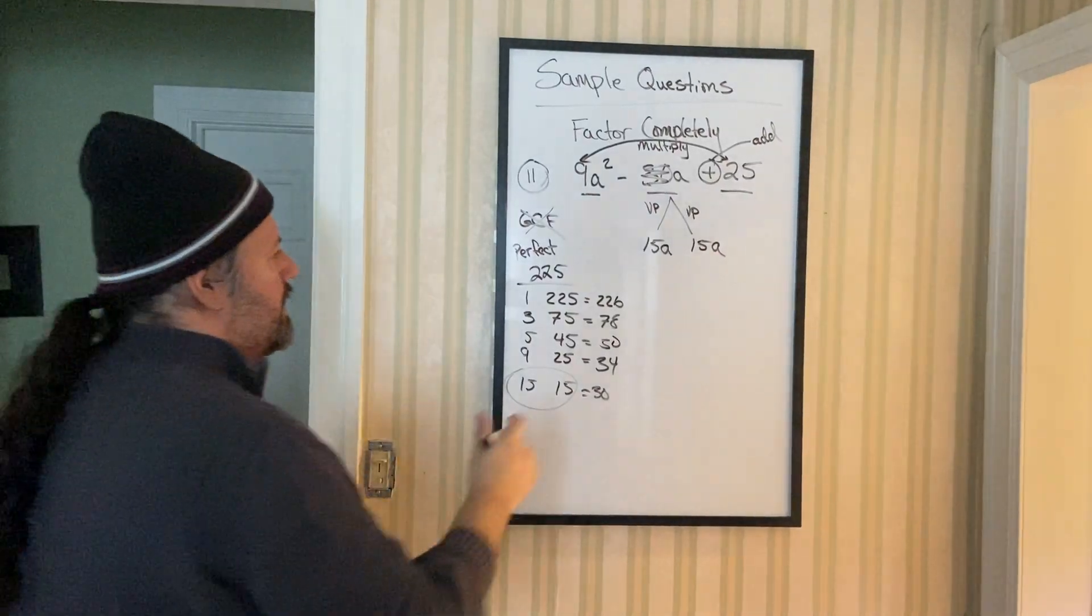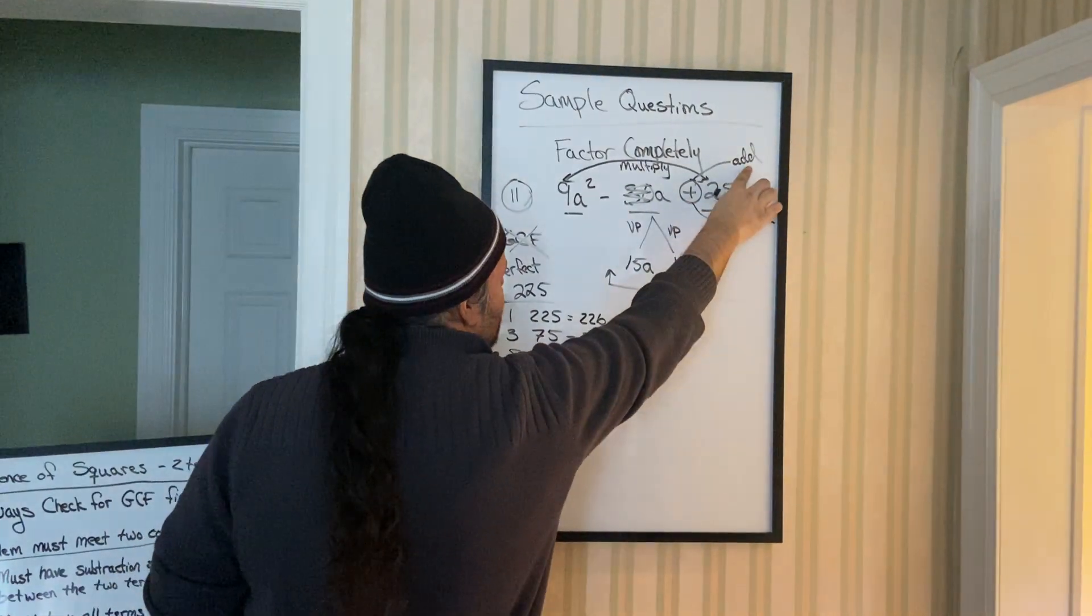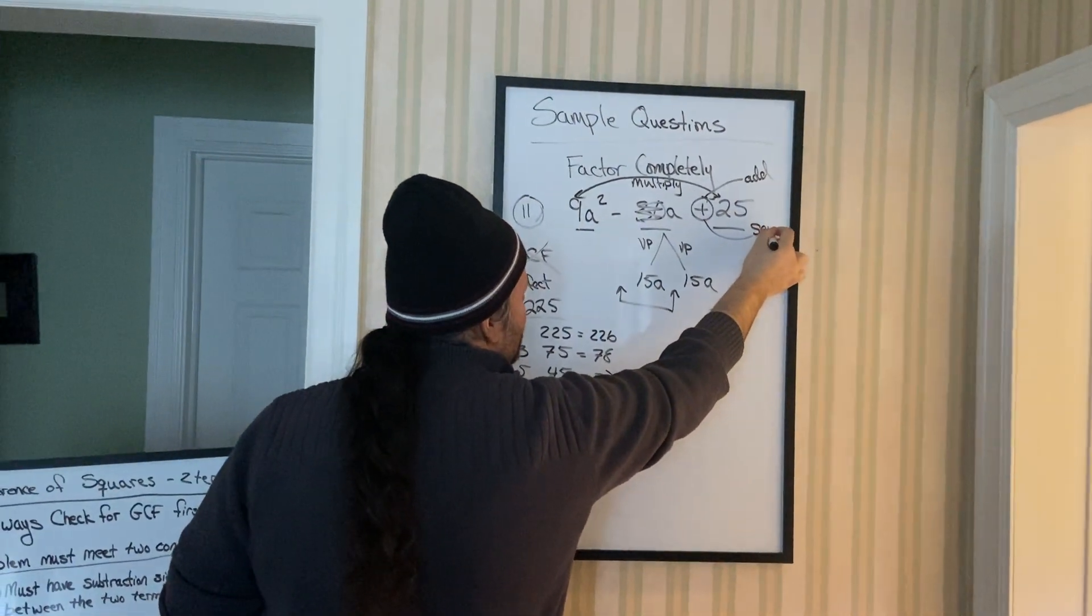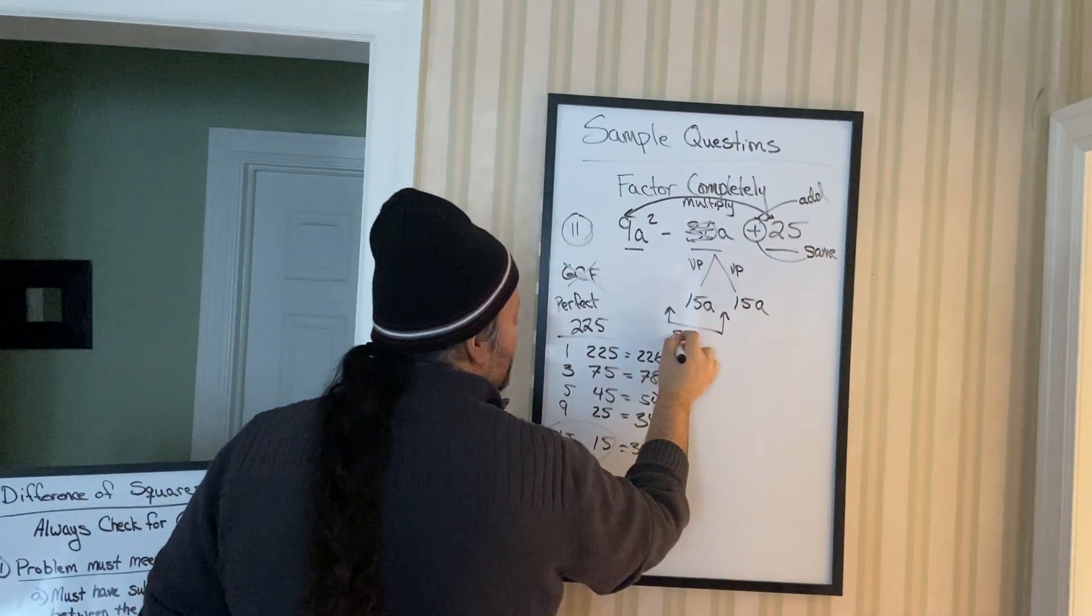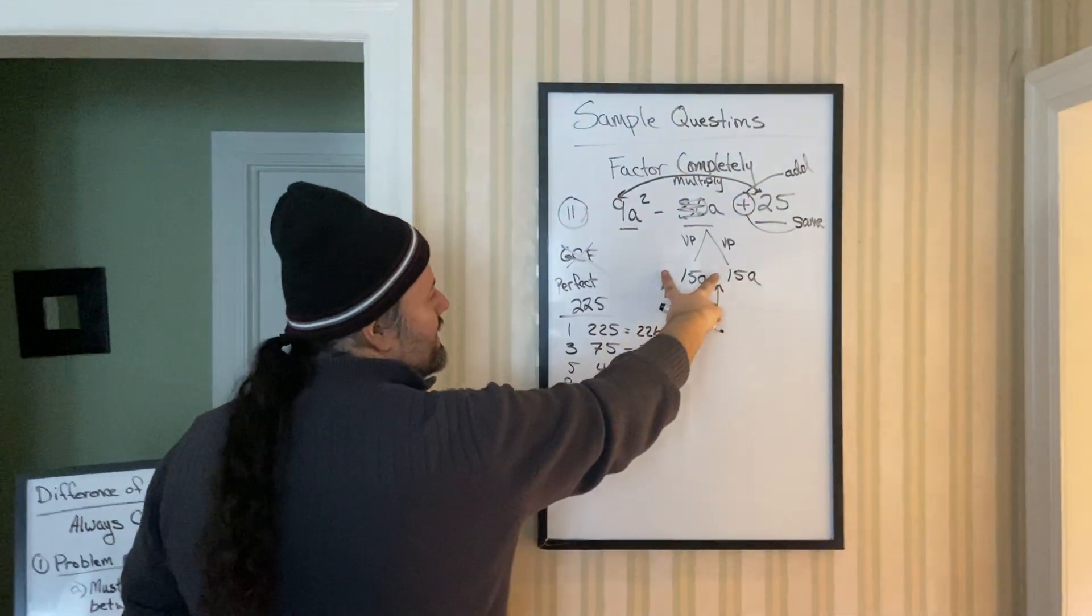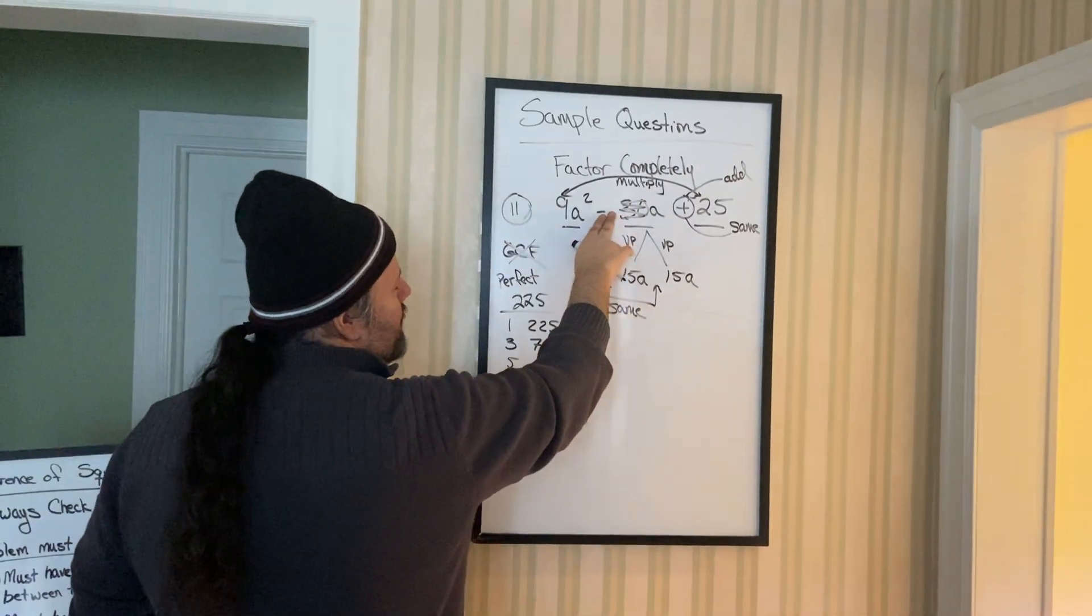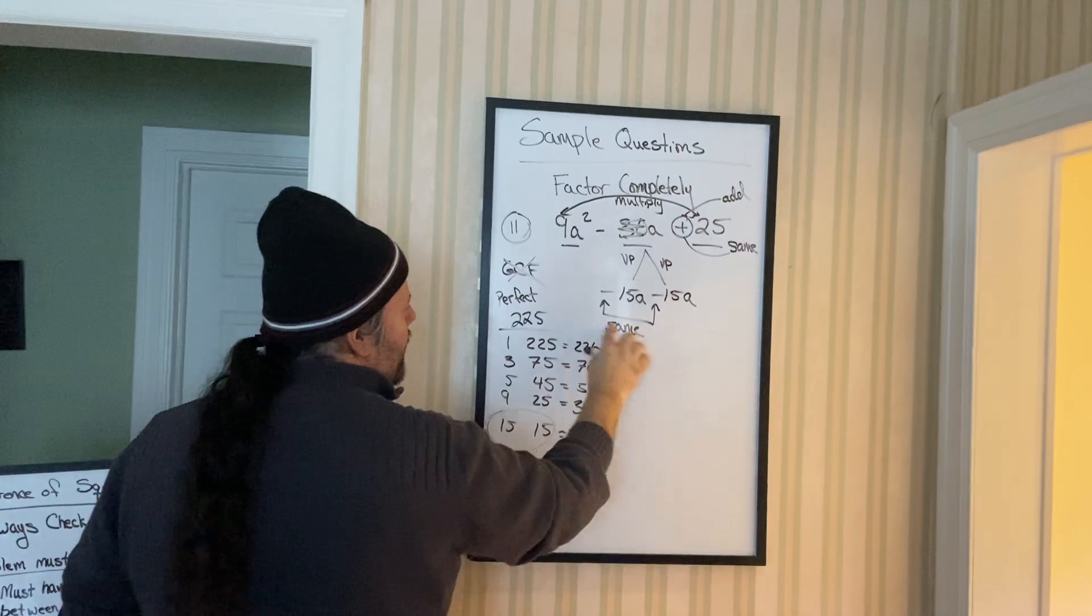And then we need signs. Step six. Remember you look at the last sign of the trinomial. When it's a plus, anytime that you add, we know it's going to be the same sign. So they're going to be identical to each other. So since it's the same number 15A and 15A, they both get the same sign as the middle. Remember? Same.